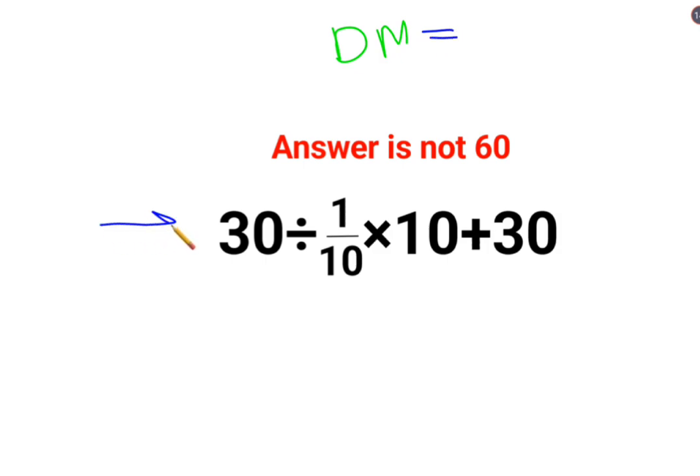In sums like these where there are division and multiplications together, you need to follow the rule of left to right. Whatever operation happens first on your left hand side has to be done first.